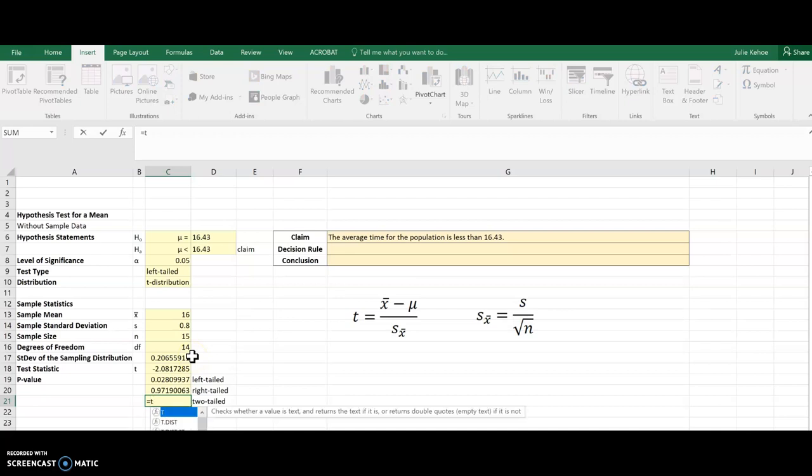And then the last one, that 2t. Well, that's two-tailed. So I can pick that one as well. Choose my test statistic and the degrees of freedom. And now I have...